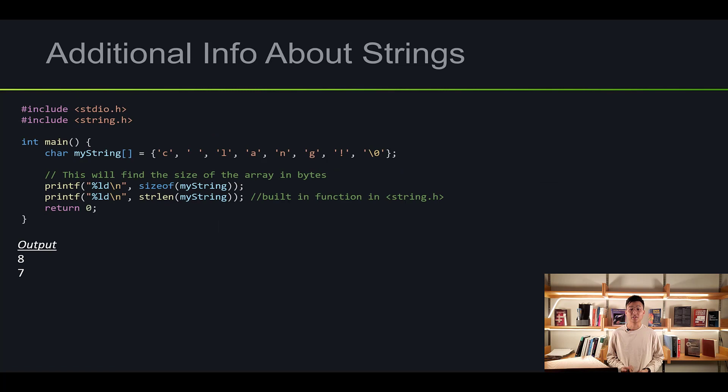Let me show you some more characteristics of a string. We've already seen this initialization statement. We are printing two things: the size of the array and the length of the string. The size of the array gives us 8, because it includes the null character. When printing the length of the string using strlen, it ignores the null character and prints 7.